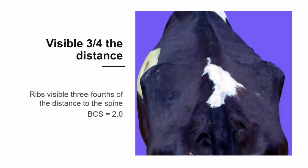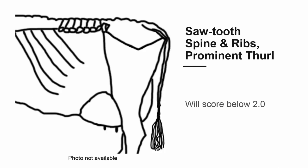If the ridges can be seen about three-quarters of the distance to the spine, the cow will score 2.0. If the ridges of the short ribs can be seen more than three-quarters of the distance to the spine, and the cow has a sawtooth appearance to her spine and prominent ribs, she will score below 2.0. We can stop scoring at this point because cows scored below 2.0 are severely thin and would be managed similarly regardless of their exact body condition score.